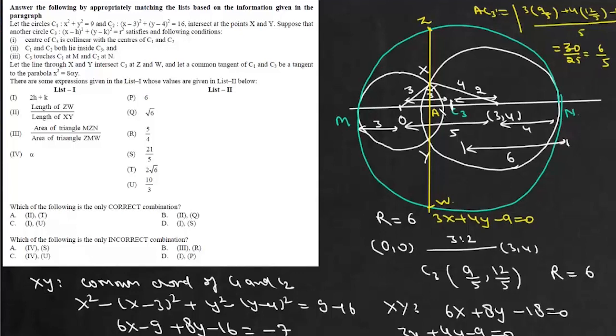And once we have this AC3 we can find length of AZ because this radius is 6 units. So this AZ will be under root of 36 minus 36 upon 25 so there will be 6 root 24 upon 5 and ZW is 2 times of AZ. So ZW will be 24 root 6 by 5.